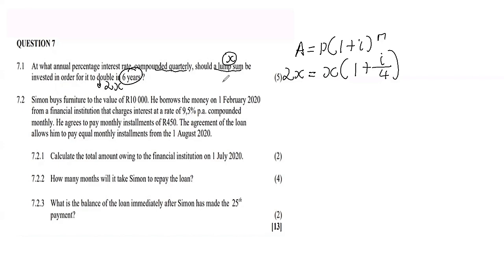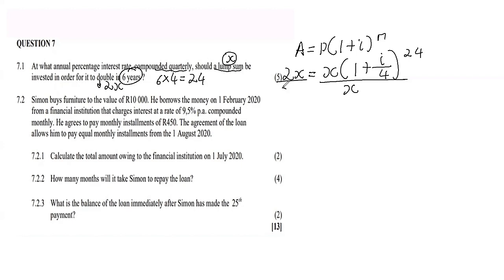This runs for six years. How many quarters do we have in six years? In one year there are four quarters, so in six years that's 6 × 4 = 24. We put 24 as the exponent.